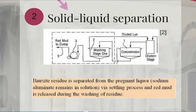Step 2. Bauxite residue is separated from the pregnant liquor. Sodium aluminate remains in solution by acetylene process, and red mud is released during the washing of residue.